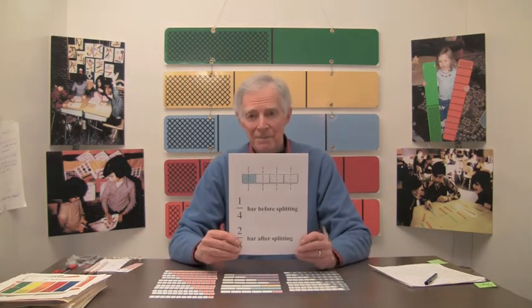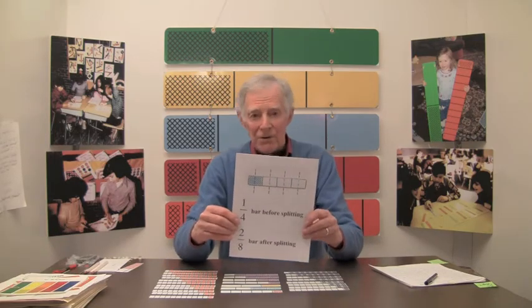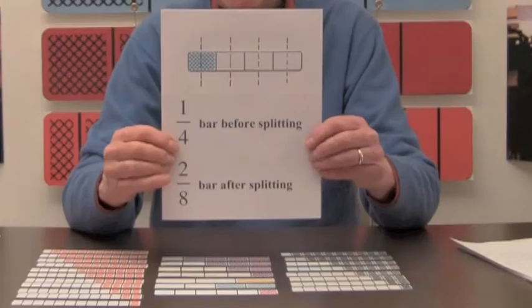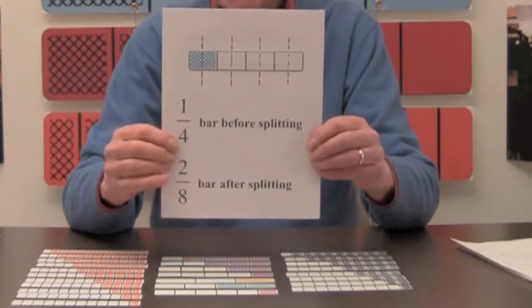This model has the advantage of being able to compare shaded amounts by placing the bars side by side. The second method for illustrating the equality of fractions comes from splitting the bars in parts. The top bar here represented the fraction one-fourth.